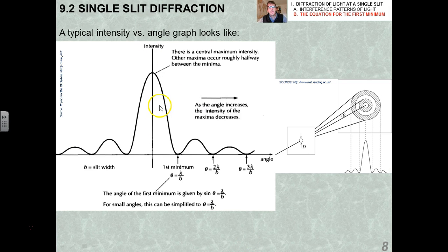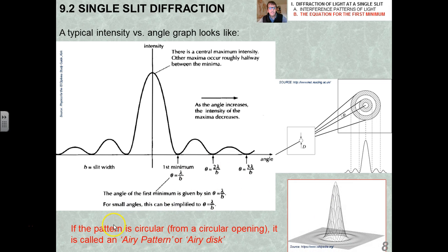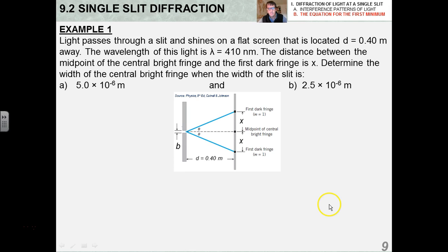So a typical intensity against angle graph would look like this. There is a central maximum followed by minima, the first minimum is at lambda equals, or theta equals lambda over B. The second would be two times that. The third would be three times that. So it's quite easy to see the pattern, and because they're integer multiples apart, the widths of the bright and dark fringes are going to be the same. Something that's just kind of interesting is this idea called an Airy disk or an Airy pattern. You should look this up on Wikipedia. It's super cool. This is from a circular opening, and this is theta equals 1.22 lambda over B.